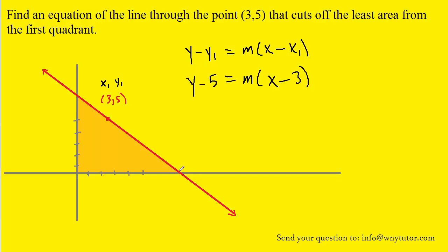Next, we will mark off the x and y intercepts of the line. The x-intercept would be located right here, and the y-intercept is located over here. The reason those two intercepts are important is that the area enclosed is a triangle, and to calculate the area of the triangle, we need the length of the base as well as the height of the triangle — we'll call it h for now.